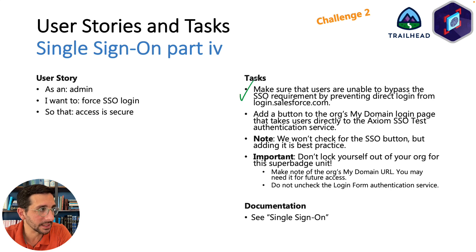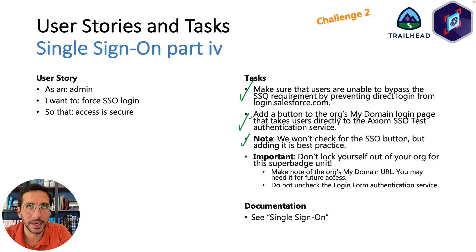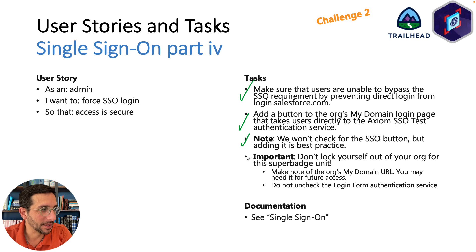Tasks here: make sure users are unable to bypass SSO requirements by preventing direct login from login.salesforce.com. You're going to add a button to the org's My Domain login page that takes users directly to the Axiom SSO test authentication service. Note: the challenge won't check the SSO button, but adding it is best practice. Make note of the My Domain URL and do not uncheck the login form authentication service. Once you've done all of those things, you're ready to pass Challenge Two.